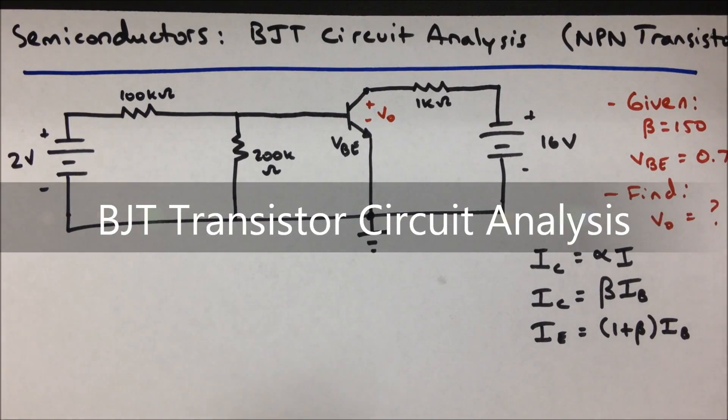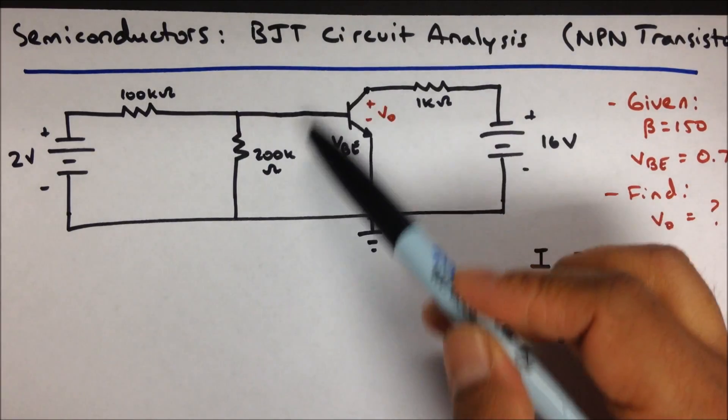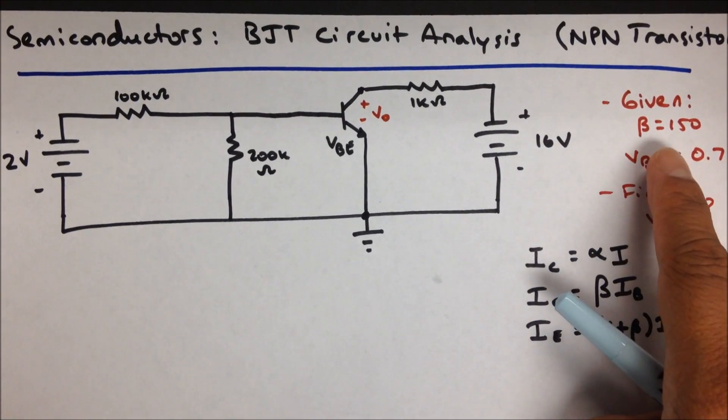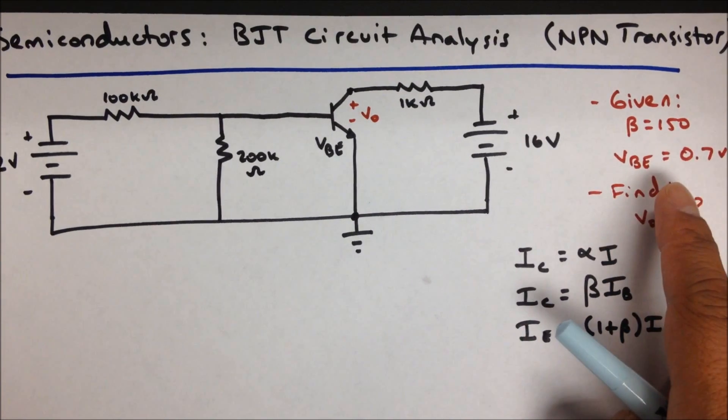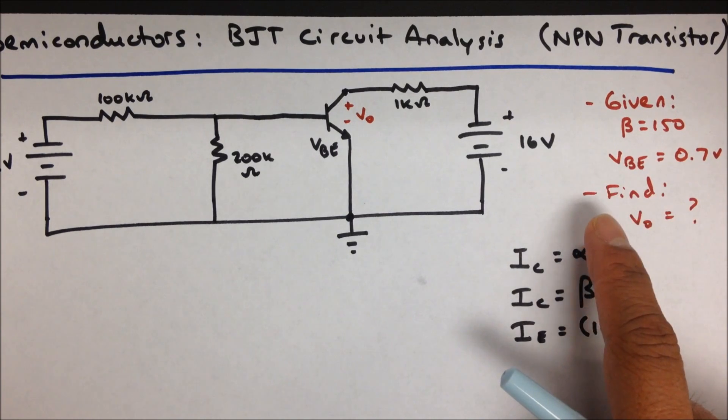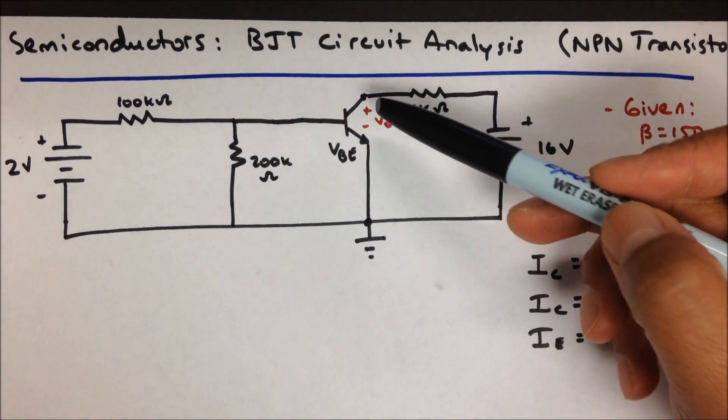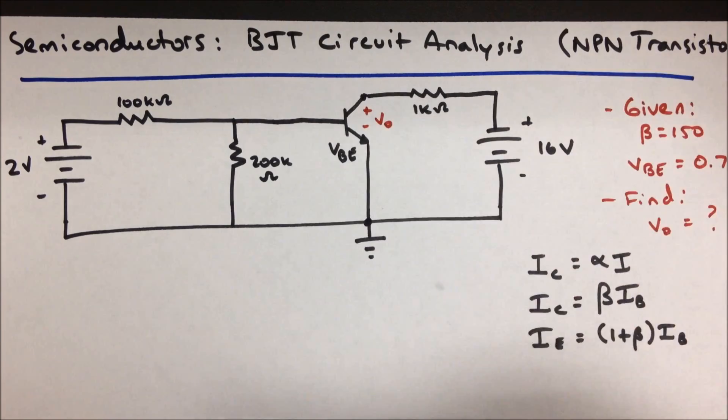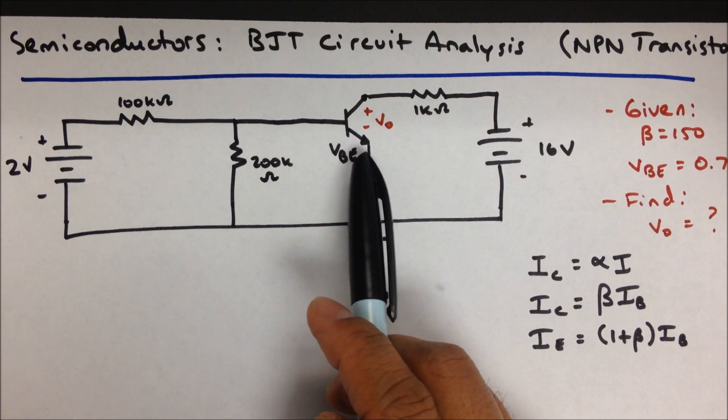Let's take a look at a circuit which makes use of a semiconductor, specifically one that has an NPN transistor, a BJT. In this problem, we're given beta of the transistor is 150, and VBE is 0.7 volts, and we want to find V0. V0 is this voltage, the collector-emitter voltage. VBE is the base-emitter voltage.